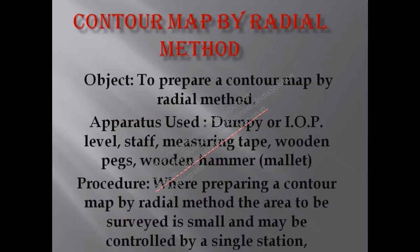For this method the apparatus that we required is a dumpy level, auto level or any other instrument with which we can take the levels. We can also use the theodolite as a level, and along with that we need a leveling staff, measuring tape, wooden pegs, and wooden hammer.